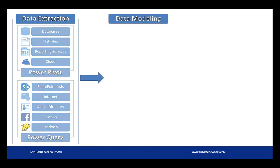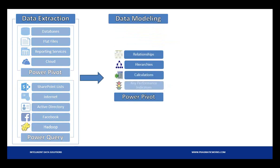The next step in the lifecycle is data modeling, primarily done using Power Pivot. Power Pivot allows you to create relationships between different data sources, create hierarchies between attributes, and create calculations — for example, time intelligence like comparing this year's sales to last year's, or a 12-month rolling average using DAX. You can also create KPIs — key performance indicators — to tell whether you're meeting your goals in certain metrics.